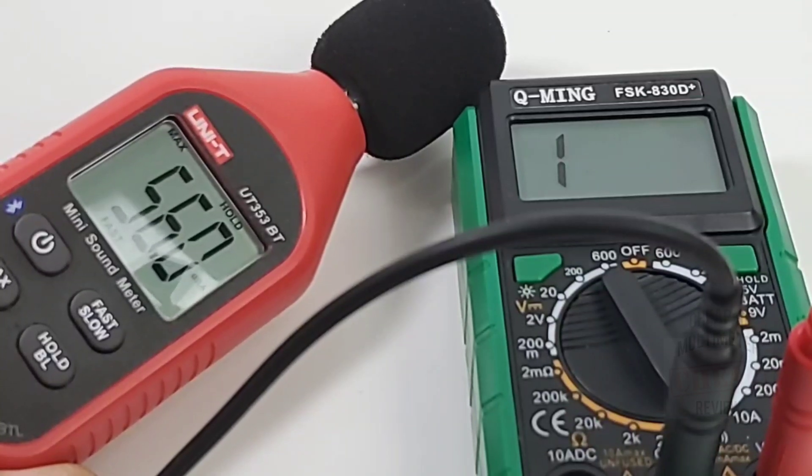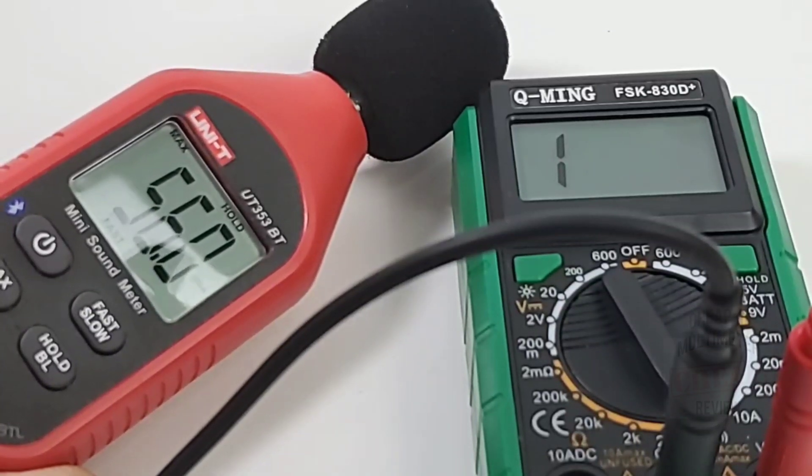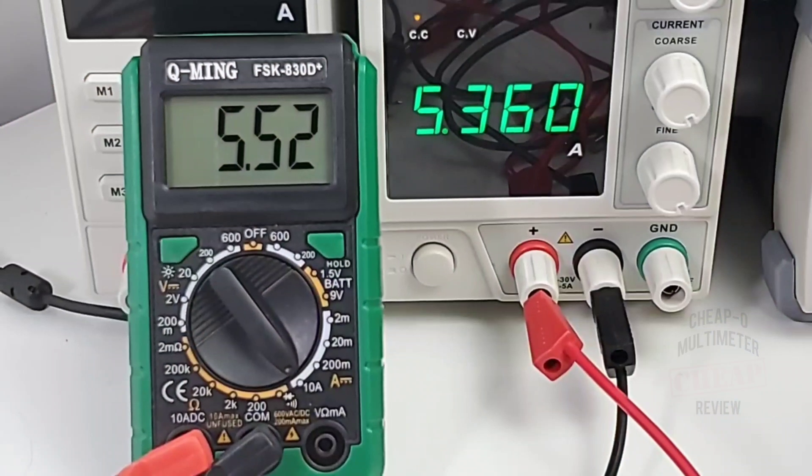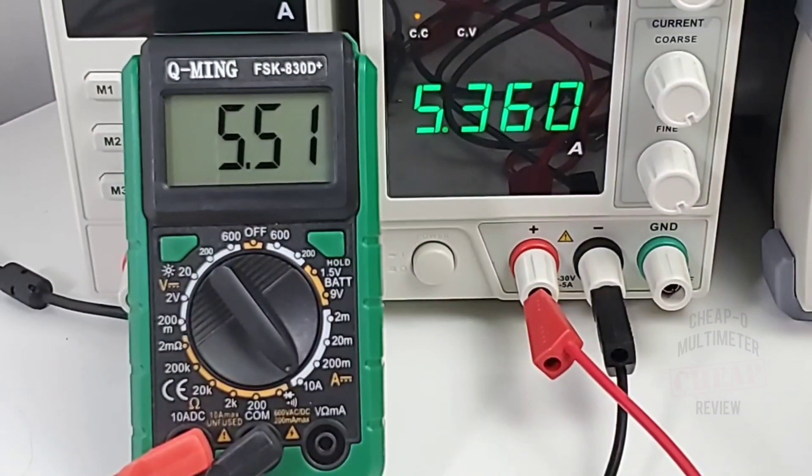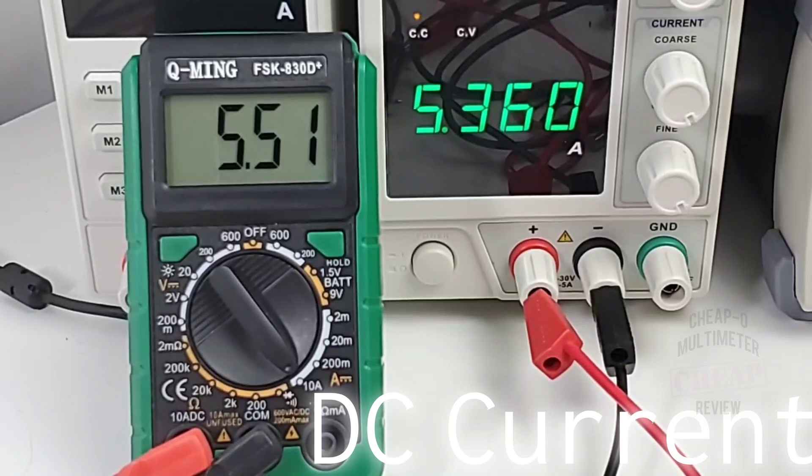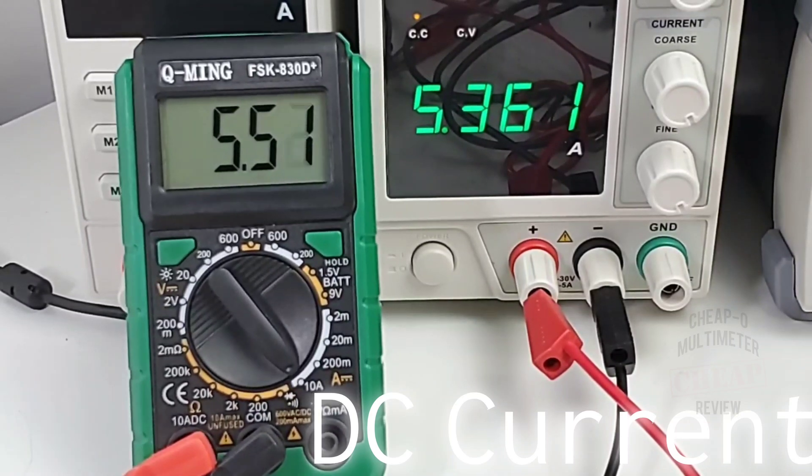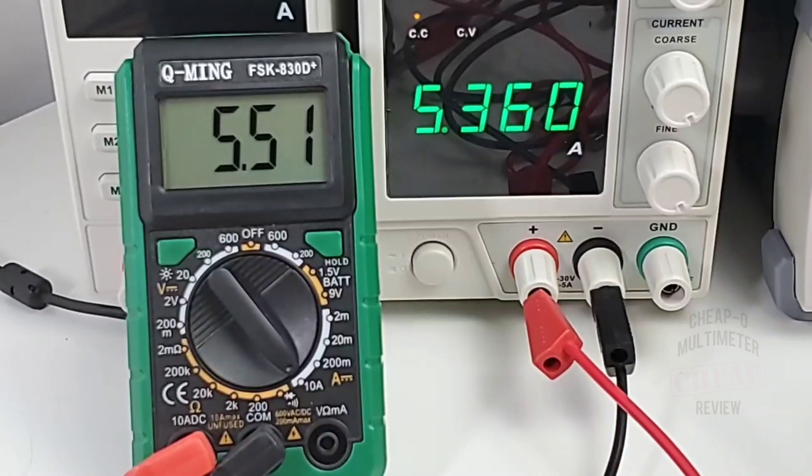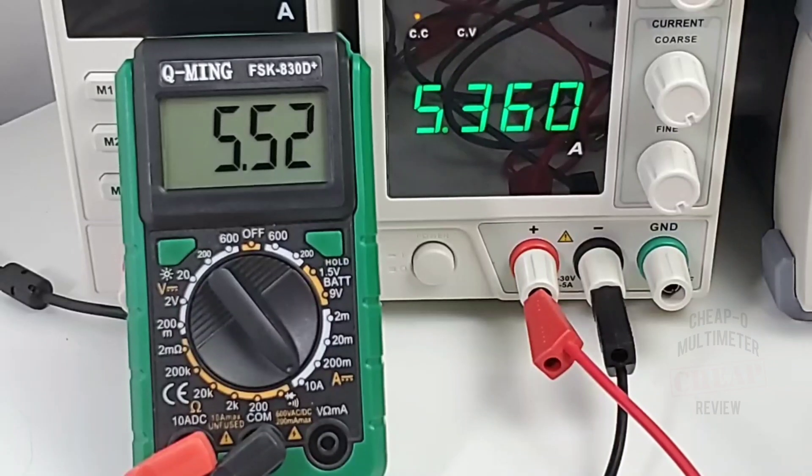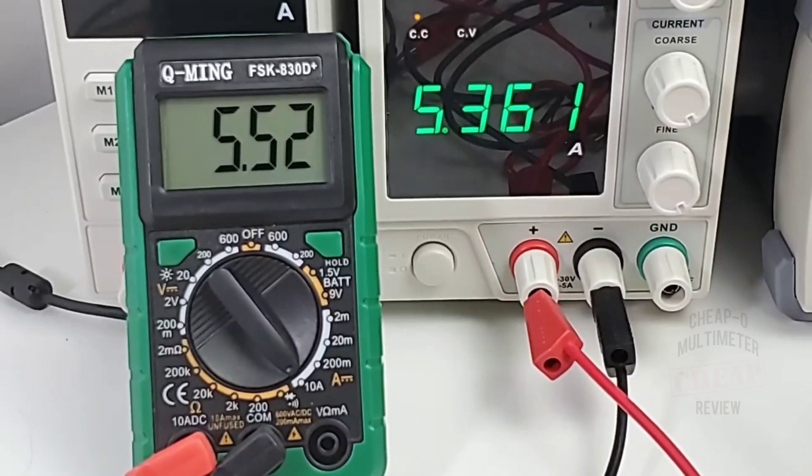I've been in the high current mode for about two minutes now, sitting around 5.3 amps, and all is well. Surprisingly the leads aren't even toasty. I thought they'd be on fire by now, but yeah, looking good.